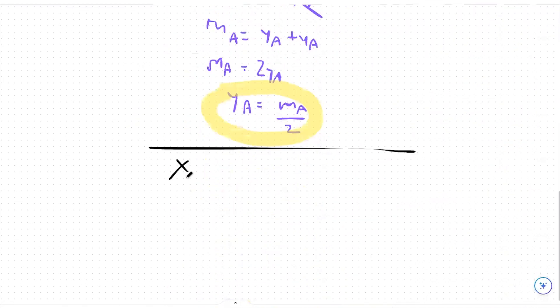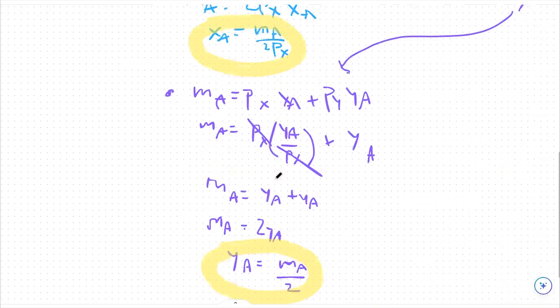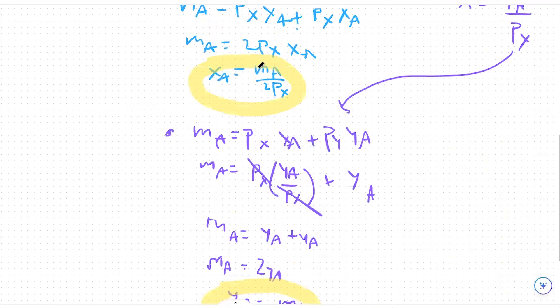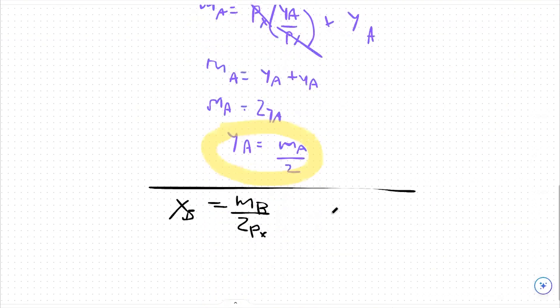So xB is going to be equal to MB over 2px. We're just making these B variables instead of A variables. So we're saying xB is equal to MB over 2px now, and then yB is equal to MB over 2.